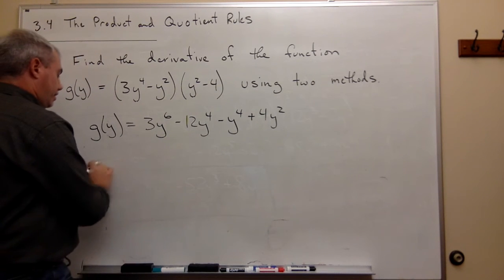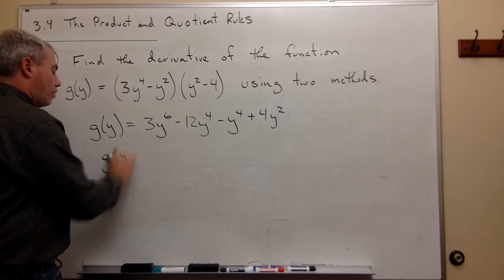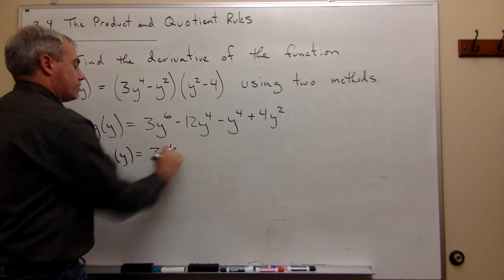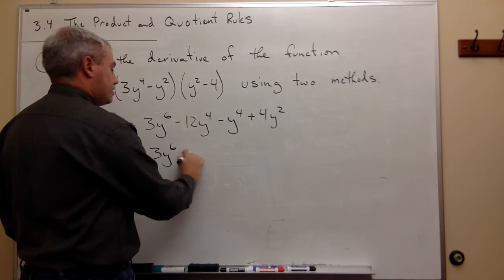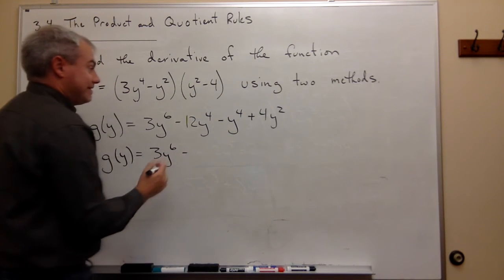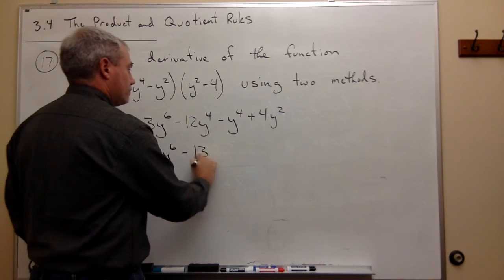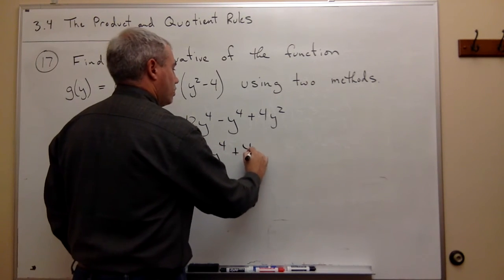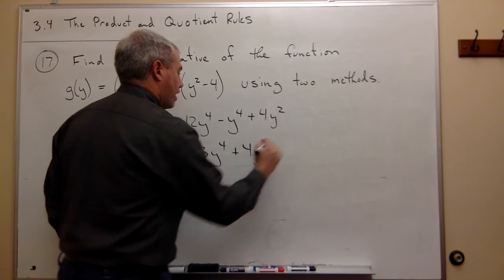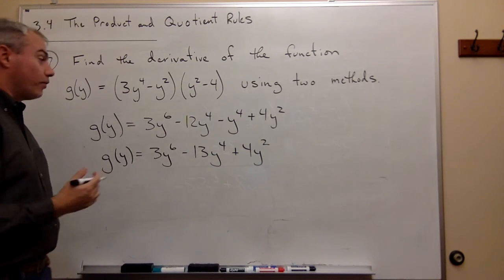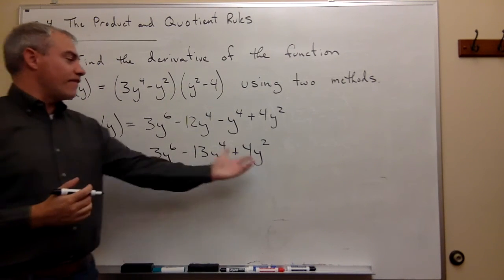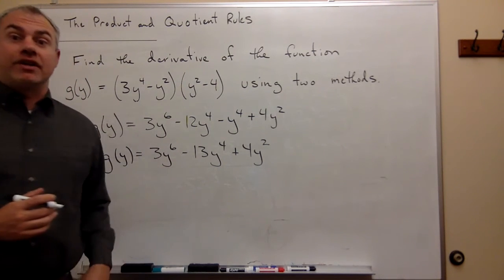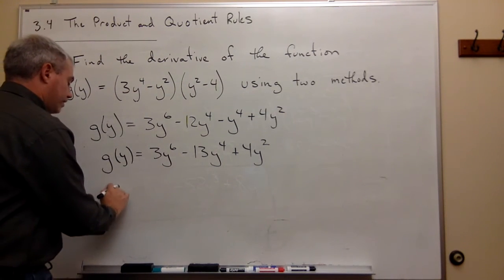Okay, so everything looks good. I could simplify even more, because some of this can be combined. So I get 3y^6 - 13y^4 + 4y^2. All right. Now we're ready to take the derivative. So now that I've foiled everything out, I've combined everything together, now let's take the derivative, see what happens.